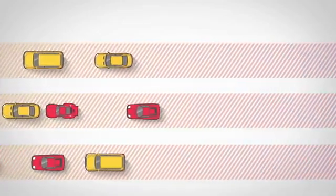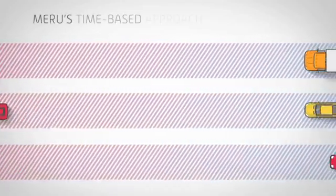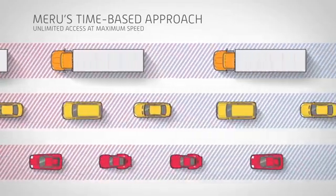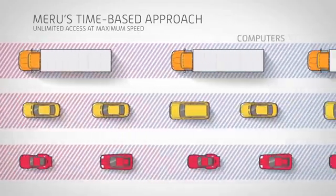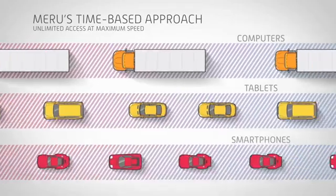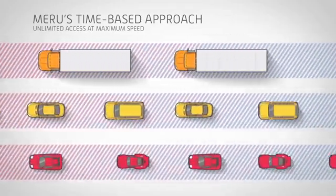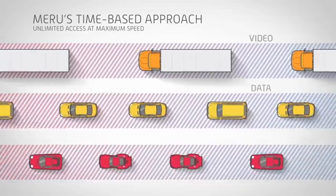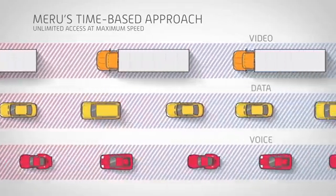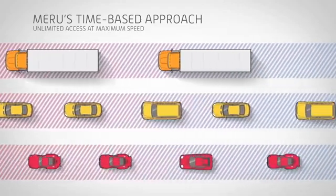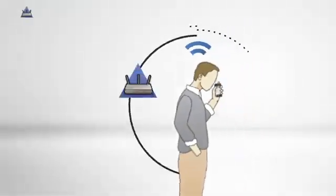Meru's time-based approach ensures true airtime fairness. On this new highway, all vehicles travel at their maximum speeds, even those carrying the most cargo, because each type of vehicle has its own lane. Everyone gets on, the slowest devices don't get in the way, and bandwidth-hungry applications like video perform at their peak. By unlocking the full potential of 802.11n standards, the Meru wireless environment delivers benefits that multiply quickly.